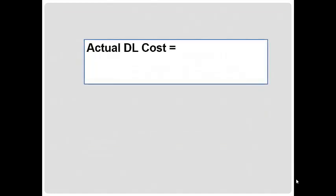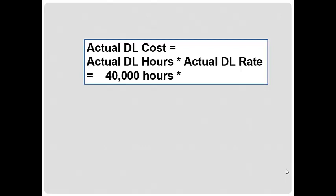And actual labor cost, of course, would be the actual direct labor hours times the actual direct labor rate. And when you look at what's given, you see that we know there were 40,000 actual direct labor hours, but we do not know the actual labor rate. So that's what we need to solve for to answer this question: what is the actual labor rate?